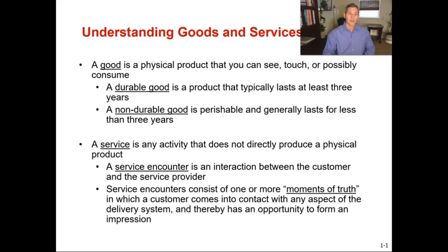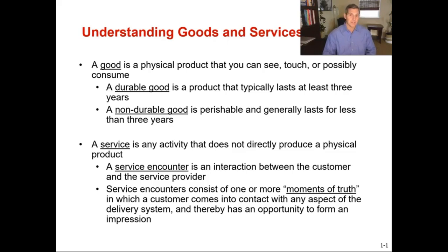A good is a physical product that you can see, touch, or possibly consume. Durable goods are products that typically last at least three years, and a non-durable good is a perishable product that generally lasts for less than three years. Whether something falls into a durable or non-durable good is sometimes debatable when you're right around that three-year mark. Is a phone a durable good or a non-durable good? A bicycle — durable or non-durable? It depends on the wear and tear for that product.